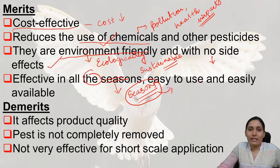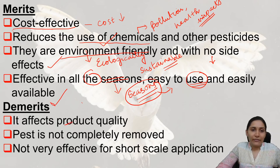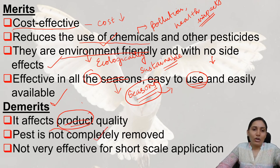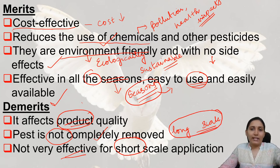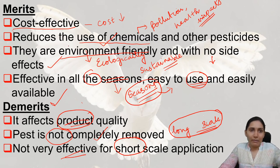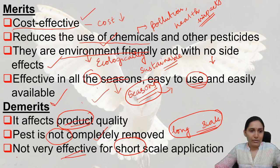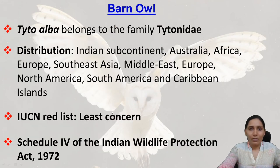Biological control methods are fit to all seasons and are very easy to use and easily available. The demerits are: it affects the product quality, sometimes the pest is not completely removed, and it is not very effective for short-scale application. It is more effective for large-scale application. These are the important points regarding the merits and demerits of biological control.